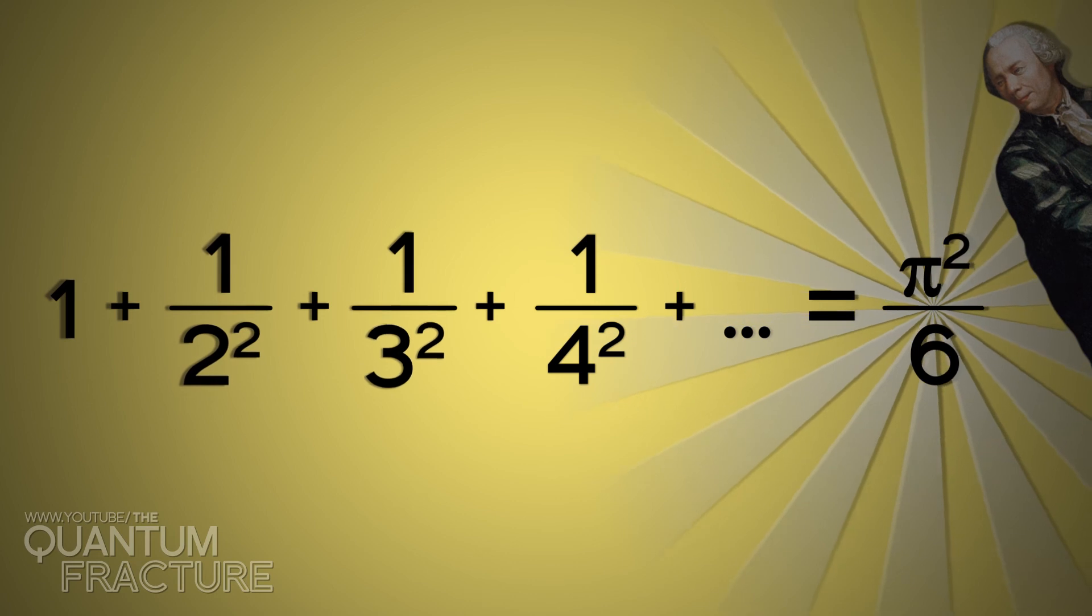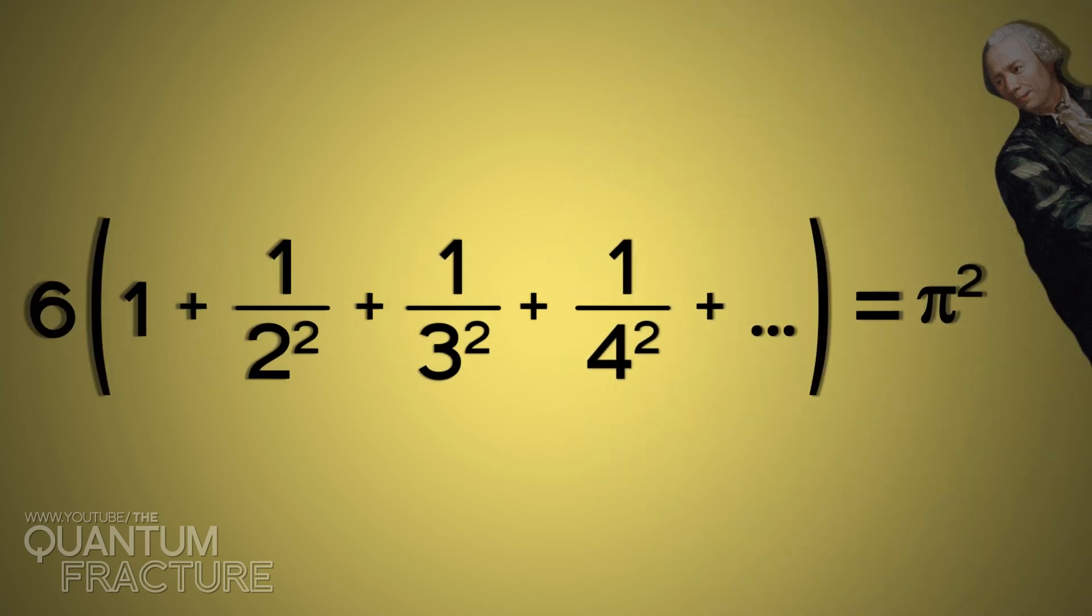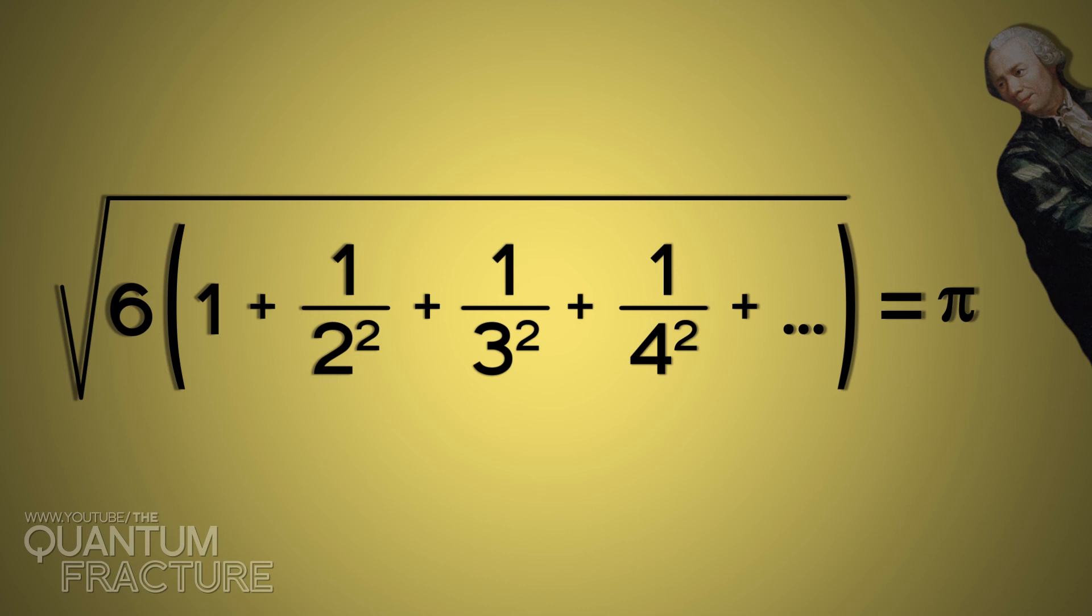So we can take advantage of this peculiar method in order to obtain pi. The idea is adding as many terms as we can, multiply them by 6, calculate the square root, and we'll get what we wanted.